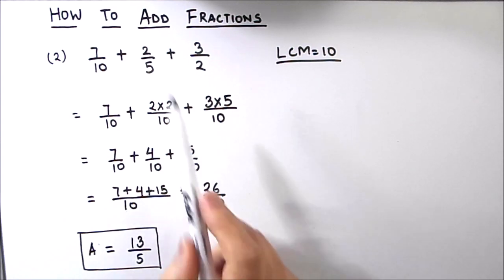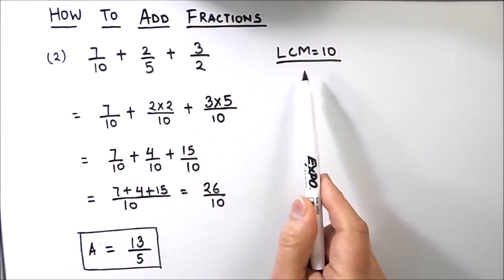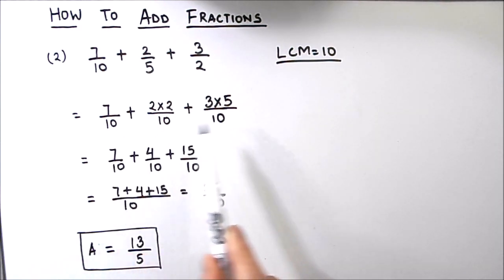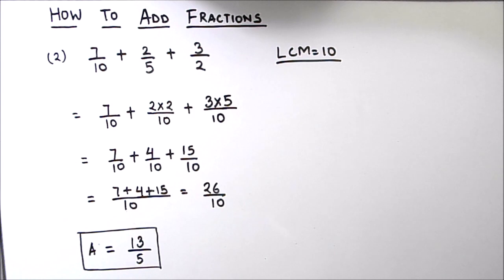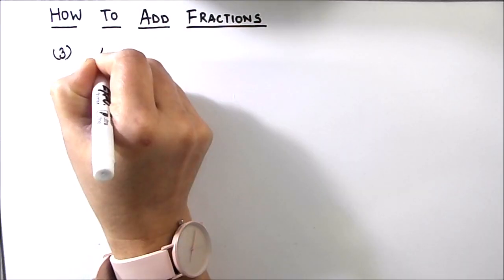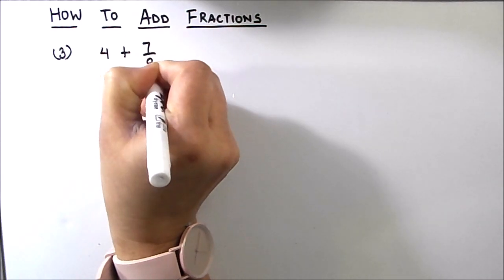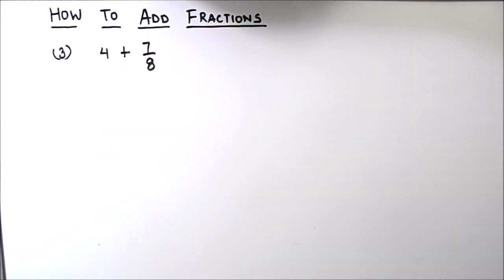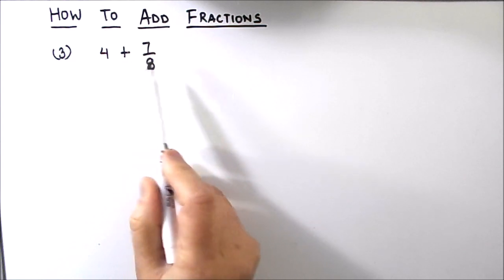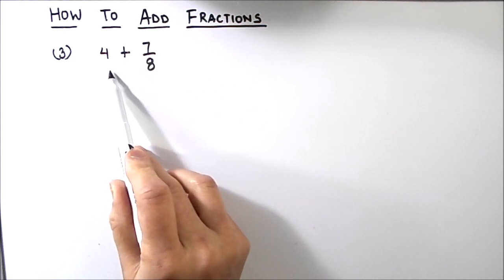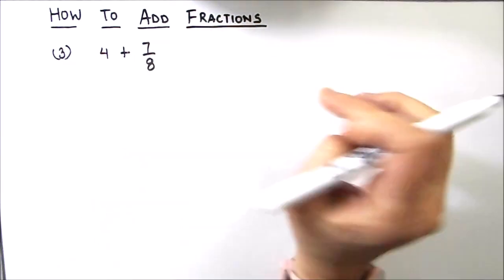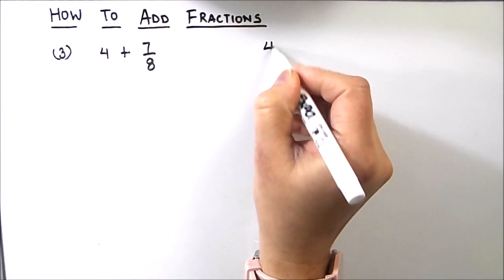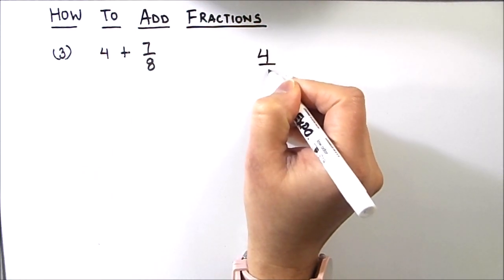For adding fractions with different denominators, first take the LCM of the denominators, make all denominators the same, then simplify and add. Now let's move to our next example: 4 plus 7 by 8. Here, 4 is a whole number and 7 by 8 is a fraction. We know that all natural numbers can be written as rational numbers — for example, 4 equals 4 divided by 1.